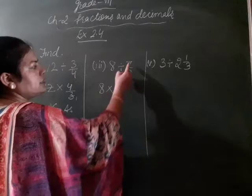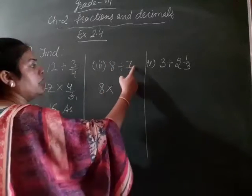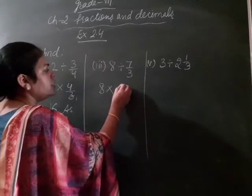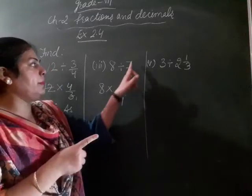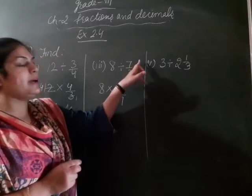Multiply. Multiply lagayas. And then write the reciprocal. 7 by 3 ka reciprocal kaya banega? 3 by 7. Reciprocal means ultra. 7 by 3 ka reciprocal, 3 by 7.